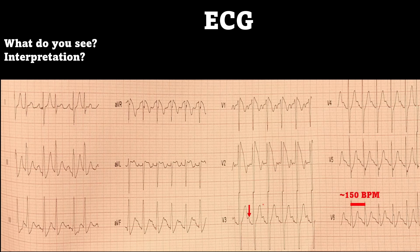First off, we can see the heart rate is about 150 beats per minute using the big box method. You can see the arrows in V3 show some kind of atrial activity as well. And in V1, you have an RSR prime — a pseudo right bundle branch block. In leads 1, 2, and 3, you can see these premature beats occurring before the next scheduled beat with no P wave associated with them.